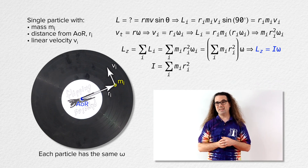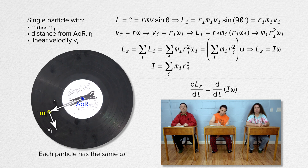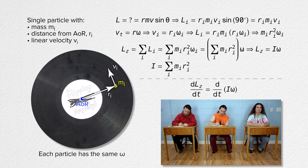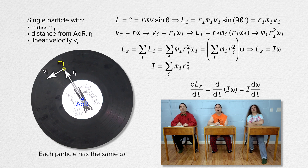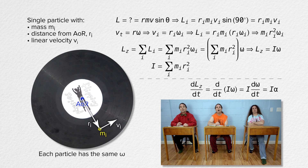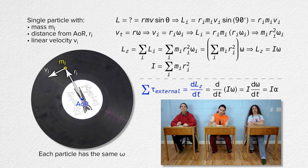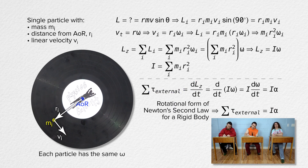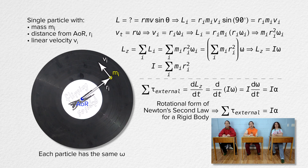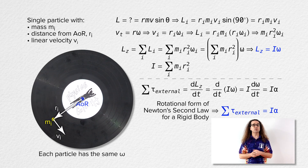We can go one step further and take the derivative of this equation with respect to time. Assuming the object is rigid, it will not change shape and therefore its rotational inertia will not change with respect to time, so we can take it out from under the derivative. The derivative of angular speed with respect to time equals angular acceleration. The rotational form of Newton's second law states that the net external torque equals the derivative of angular momentum with respect to time. Therefore, we just derived the rotational form of Newton's second law for a rigid body: the net external torque acting on a rigid body equals rotational inertia times angular acceleration, all about the same axis of rotation.